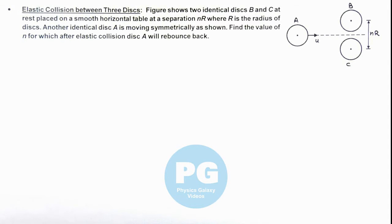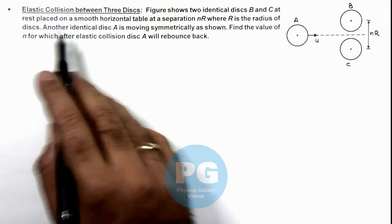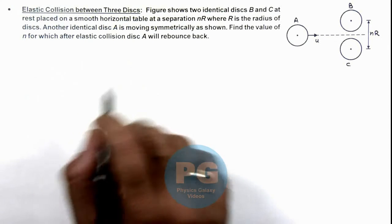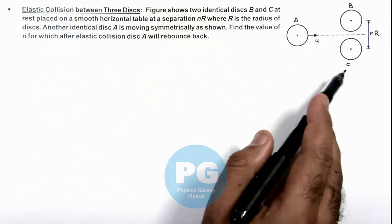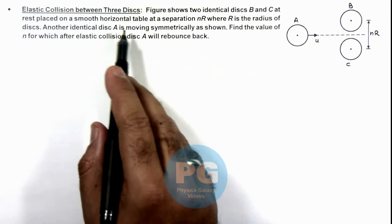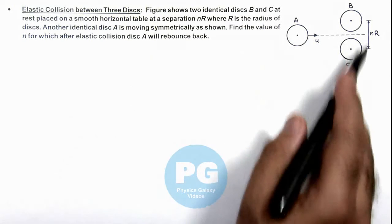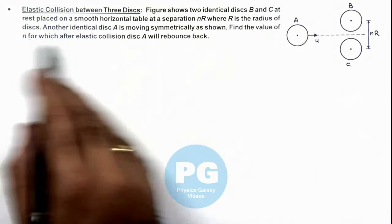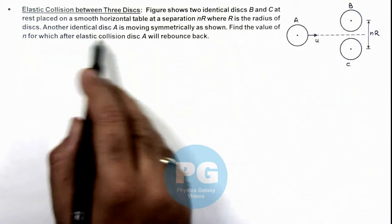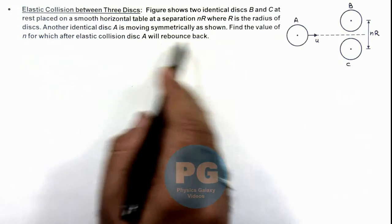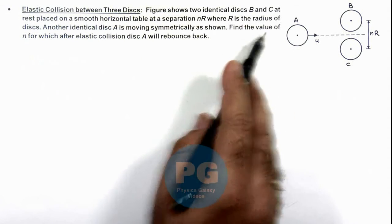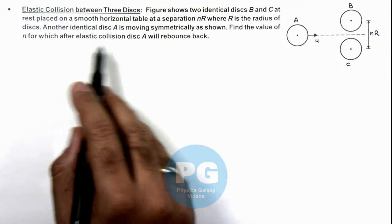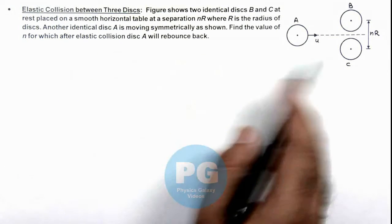In this illustration we'll analyze an elastic collision between three discs. Here the figure shows two identical discs B and C at rest, placed on a smooth horizontal table at a separation nR, where R is the radius of these discs. Another identical disc A is moving symmetrically as shown. We are required to find the value of n for which after elastic collision disc A will rebound back.